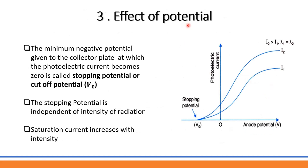The third factor is the effect of potential. The frequency and intensity of light are kept constant, while the potential on the collector plate is varied. When the collector plate is positive, electrons are attracted to it, increasing the photoelectric current.